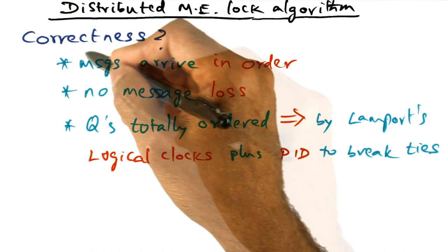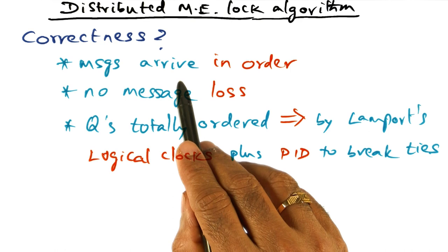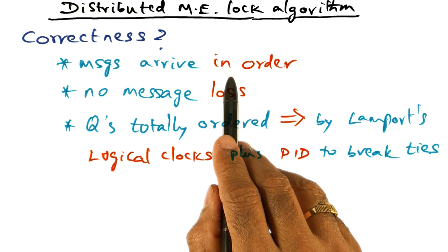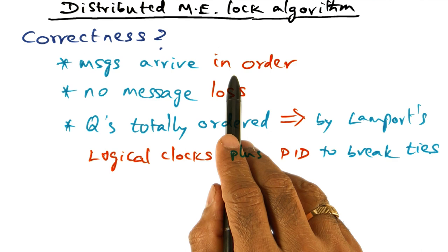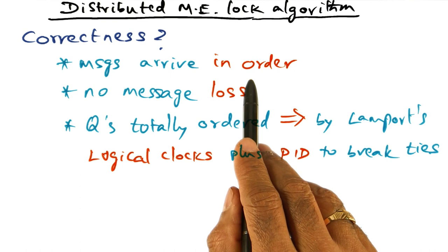The assumption is messages between any two processes arrive in order. So messages don't crisscross each other. If I send a message and I send another message, the first message is going to reach the destination first, the second message is going to reach the destination second. And that's what is meant by saying that messages arrive in order at every node in the distributed system.